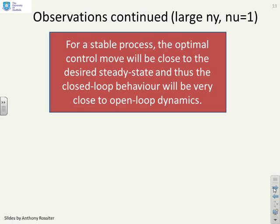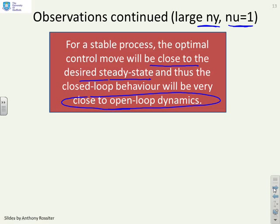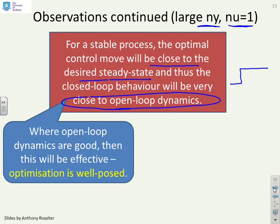So then, for a stable process, the optimal control, and this is with large ny and nu equals 1, will be close to the desired steady state. And thus, and this is the key thing, you're going to get something which is very close to open loop dynamics. You've only chosen nu equals 1, you've basically said move the input to the value which gives me a small steady state error. So the input is going to be something pretty close to a step, and therefore you're going to get open loop dynamic behavior. Where the open loop dynamics are good, then this could be an effective control or it will give you good integral action, open loop behavior, reasonable settling time, and you can also argue that in this case the optimization is fairly well posed.